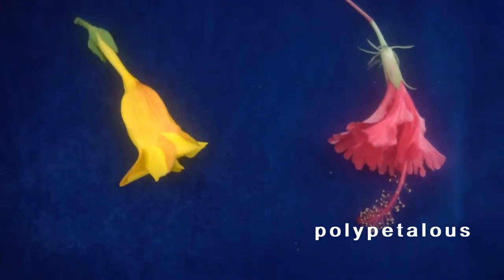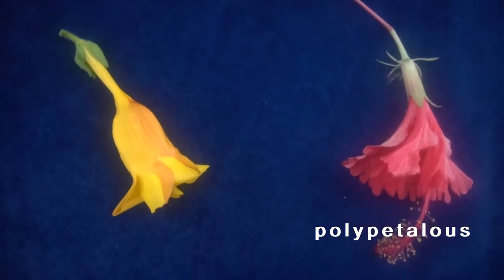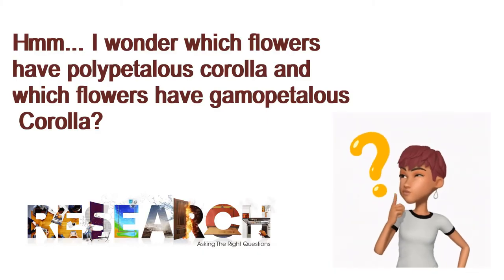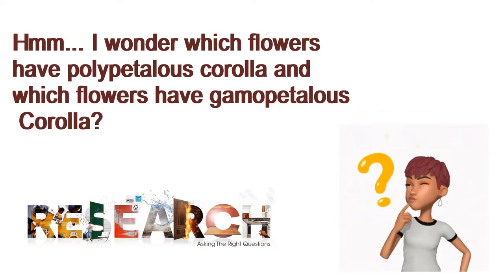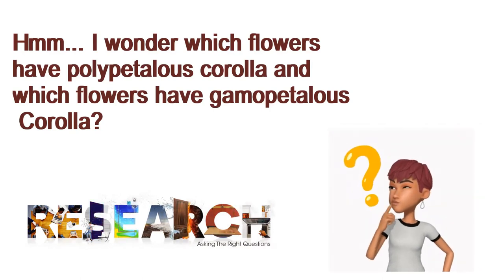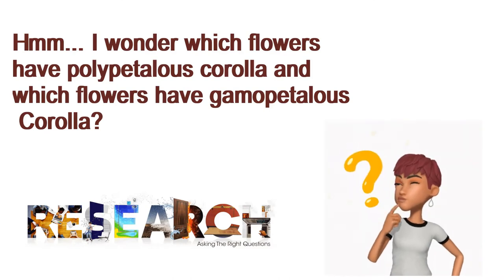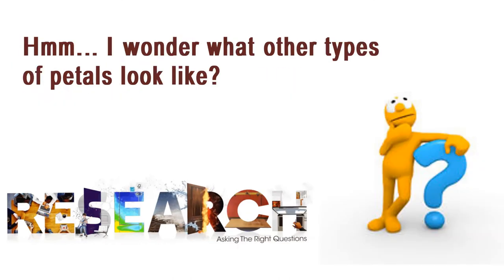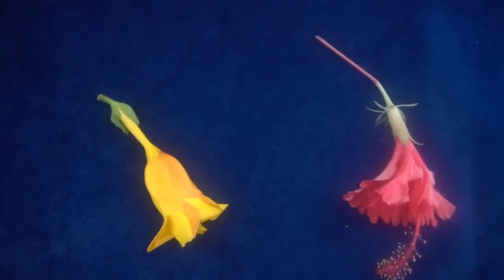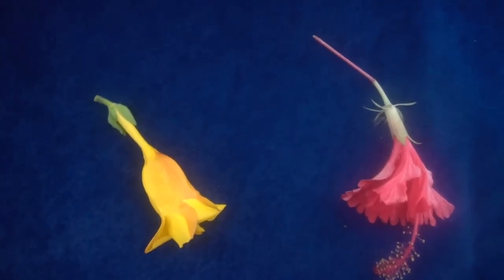So you can do your own research and give names, or find out names of flowers that have gamopetalous corollas and those that have polypetalous corollas. Another research you are going to do is to find out other types of petals — there are other types like tubular — to find out how the petals are when we say they are tubular and when we say they are spalled.